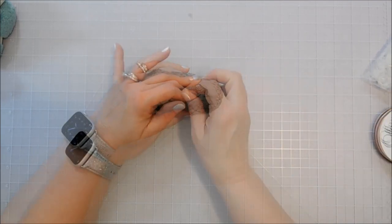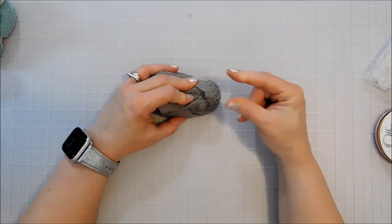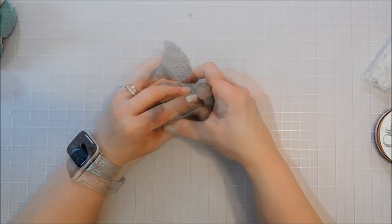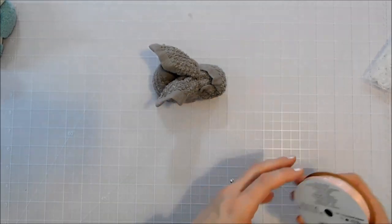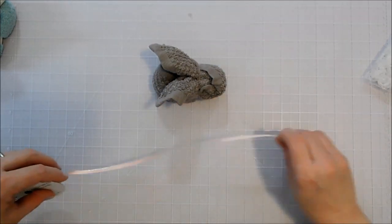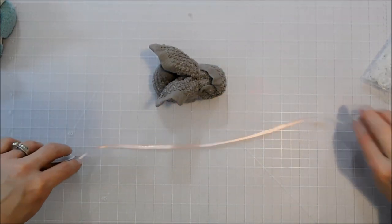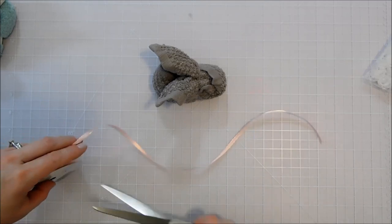And then I'm going to put on a little clear rubber band just to help hold that in place. Okay, so there's our little bunny and we're going to go ahead and tie a piece of ribbon.